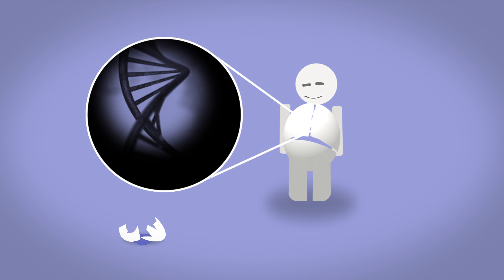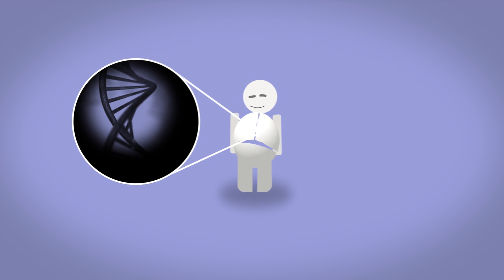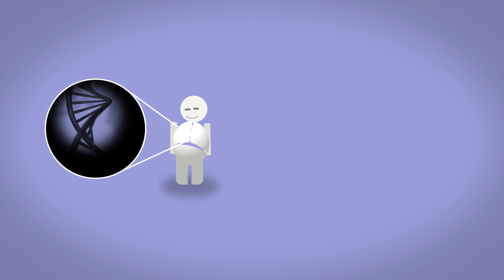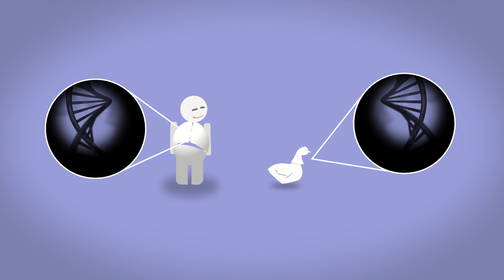Mutations accumulating since the distant past have disabled this gene so that it no longer functions to produce yolk protein. This gene remnant was precisely located by scientists who predicted where it would be based on the location known from the chicken genome.